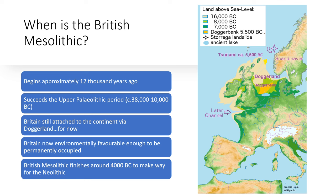During the Paleolithic, Britain went through periods of being a frozen wasteland, either wholly or partially uninhabitable, meaning there were periods where there were no humans in Britain at all. However, during the Mesolithic period, the climate was beginning to warm and give way to the Holocene, meaning the glaciers were melting and sea levels were rising.